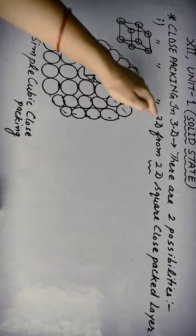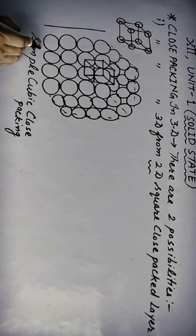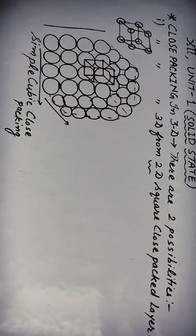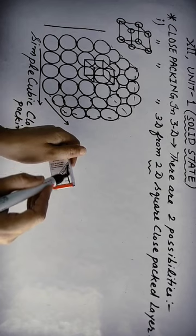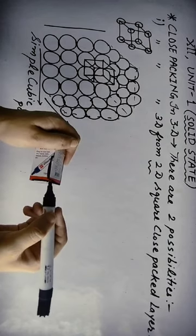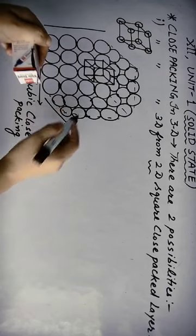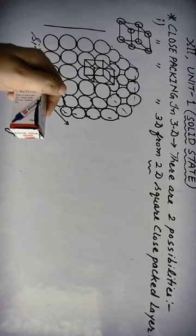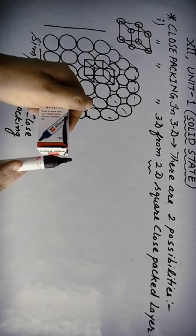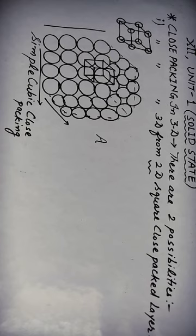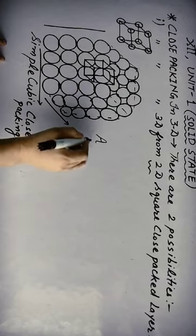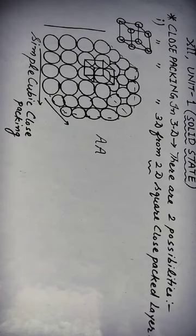This three-dimensional closely packed structure can be understood using a box model with three axes. Layers are stacked one above another — first, second, third — and each layer's particles are exactly aligned. Particles of the first layer are denoted as A type. Since every subsequent layer placed is exactly above the previous one, all layers — second, third, and so on — are also A type. So this packing is referred to as A-A-A type of packing.